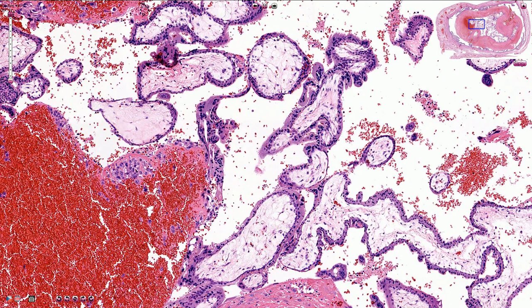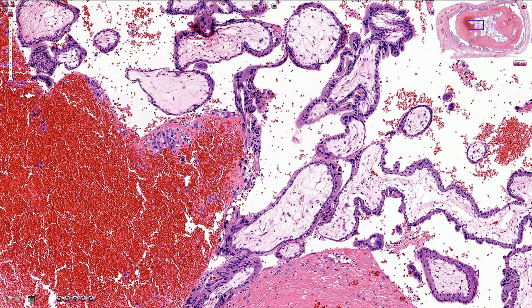On the surface of the villi we can appreciate the two-layered trophoblast, which consists of the inner layer of the cytotrophoblast and outer layer of the syncytiotrophoblast, made out of these fused multi-nucleated cells and cellular structures. We can also see extravillous trophoblast, and those are these cells here.